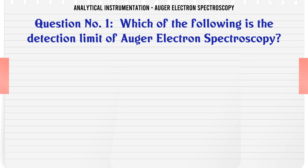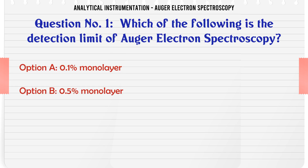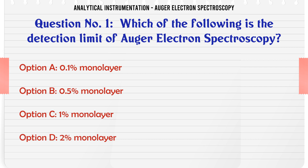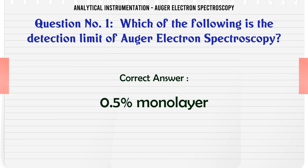Which of the following is the detection limit of Auger electron spectroscopy? A. 0.1 monolayer. B. 0.5 monolayer. C. 1 monolayer. D. 2 monolayer. The correct answer is 0.5 monolayer.